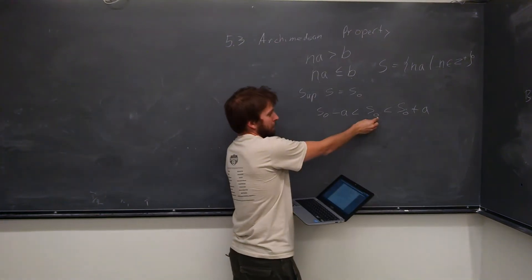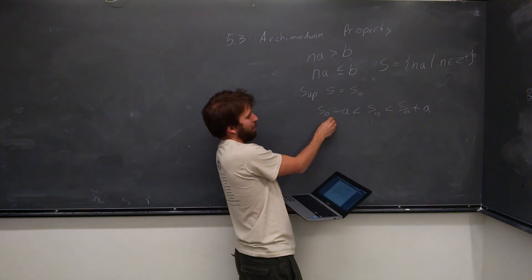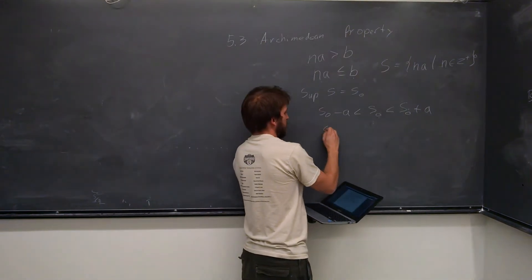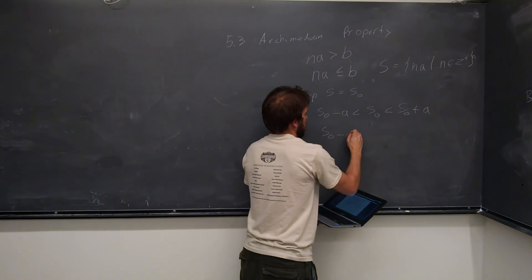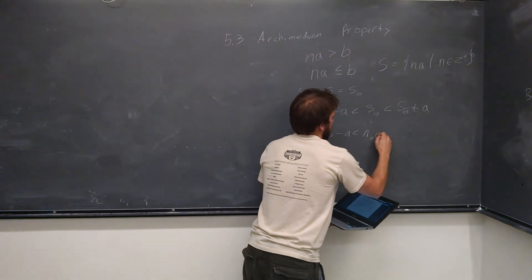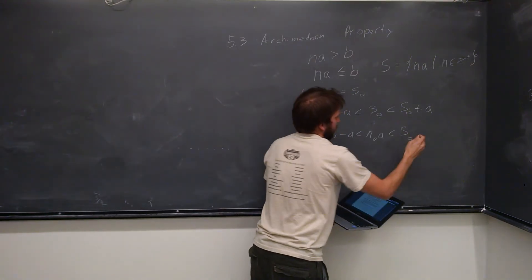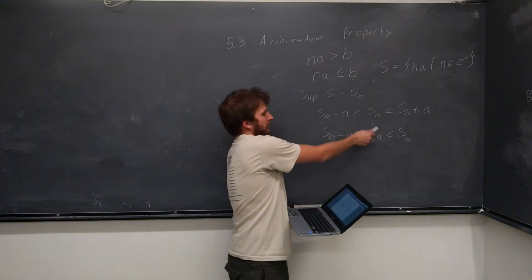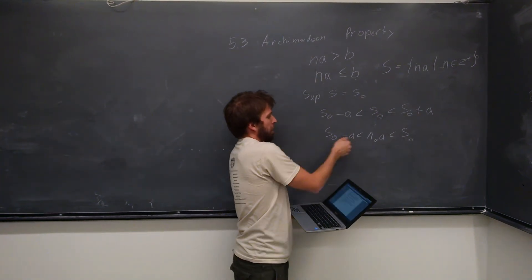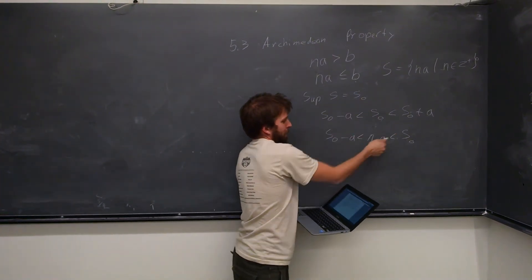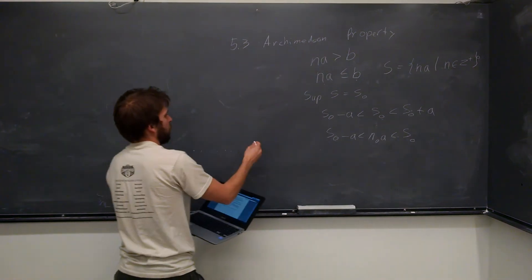Because this is the supremum and this is not the supremum, we know that there's actually a value in here between those two. If this did not hold true, then this would actually be the supremum rather than this. So we know that this holds, this is true.